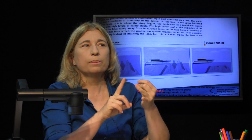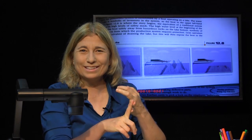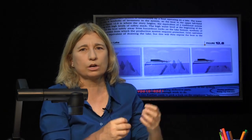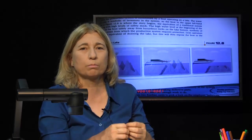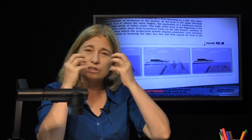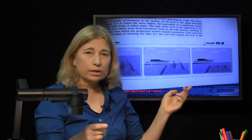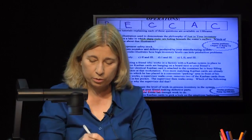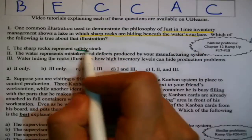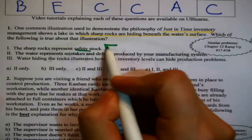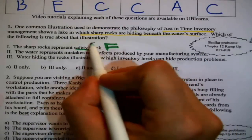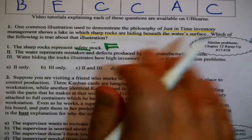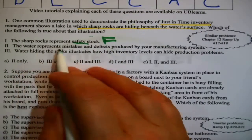You're in the boat. The water is inventory — Lean is draining away inventory — and the sharp rocks are the problems that are revealed. We need to hold that in mind while we test these statements, because this is basically a quiz on that allegory.